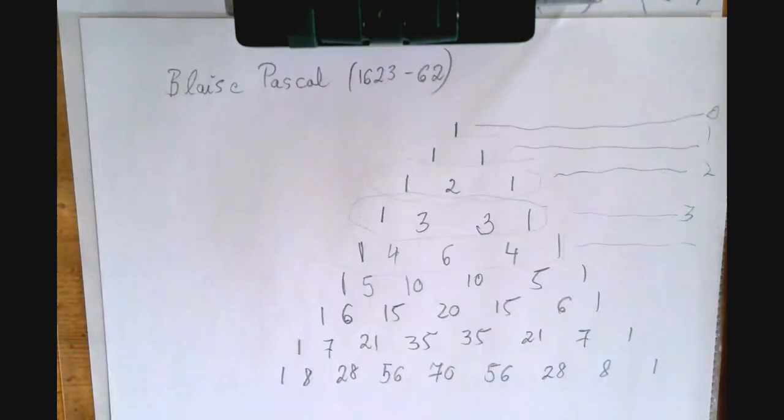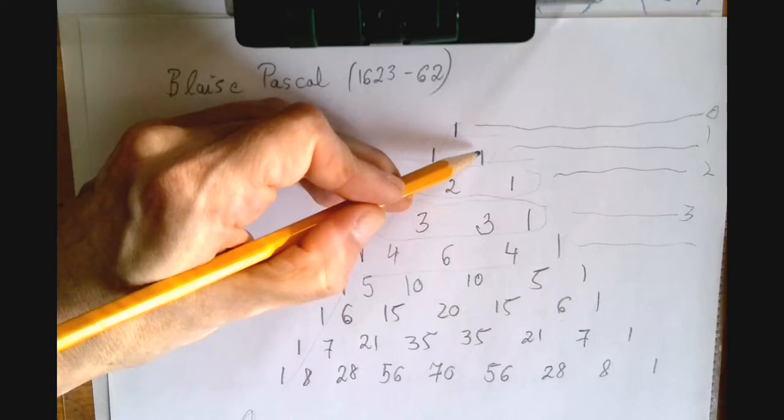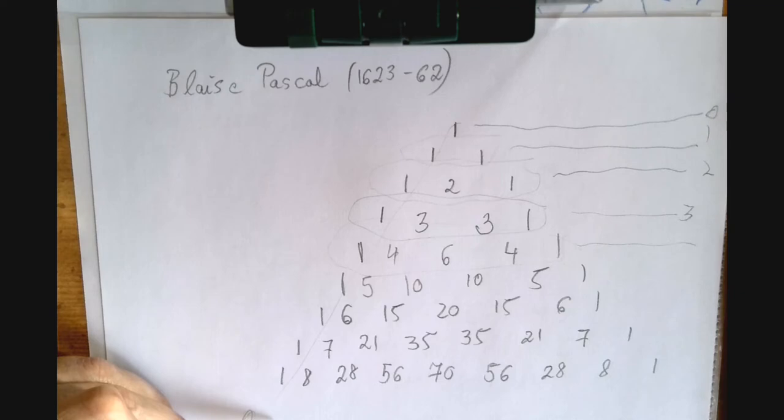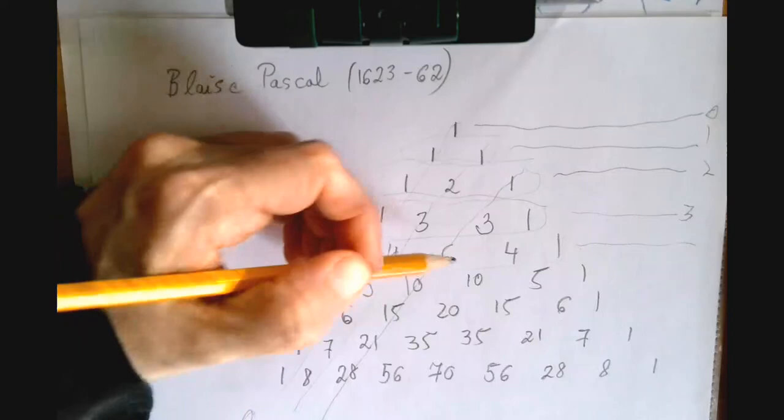So every horizontal line is what we call a row. Now the columns are like this. They are tilted. And if we call this boring one the zeroth column, then the first column, look what the first column does. It counts 1 through n. And that's actually the same as n choose 1. This is n choose 0. This is n choose 1. This is n choose 2. So if we start with 0 labeling the columns, then this is the first, second, at least the third one.